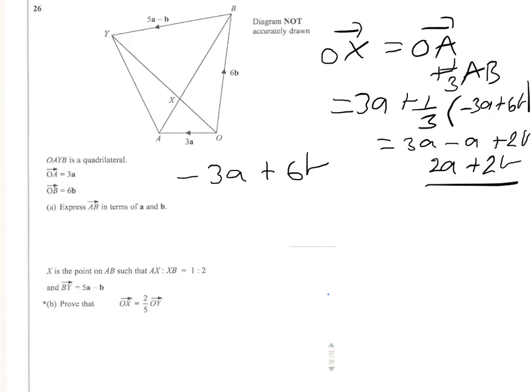And we need to say that's equal to two-fifths of OY. So we need to find OY. Now OY is going to be 6b plus 5a minus b. So we'll write that in. So OY equals 6b plus 5a minus b. And that comes to, I'll just rub that out, it comes to 5b, 6b minus b. I'll just show you what I mean there. 6b minus b is 5b plus 5a.